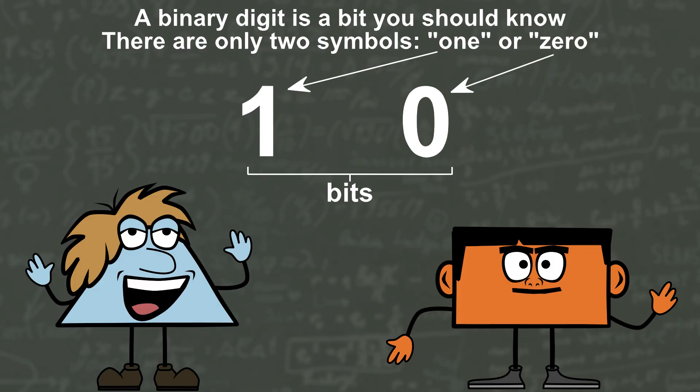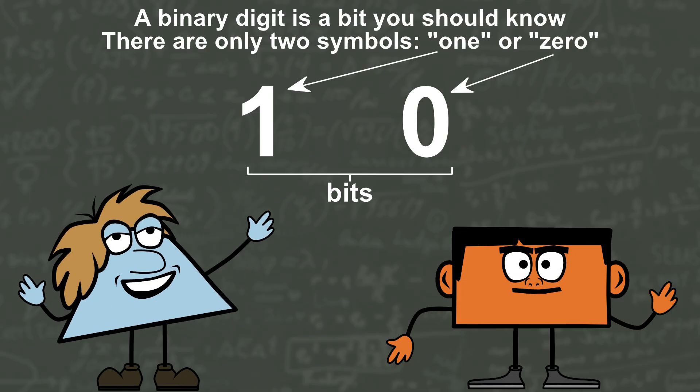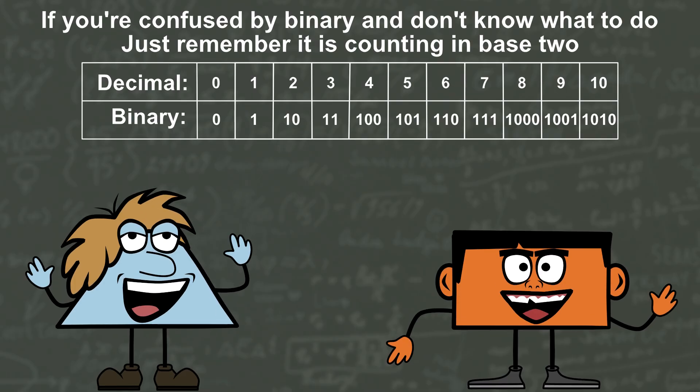A binary digit is a bit you should know. There are only two symbols, 1 or 0. If you're confused by binary and don't know what to do, just remember it is counting in base 2.